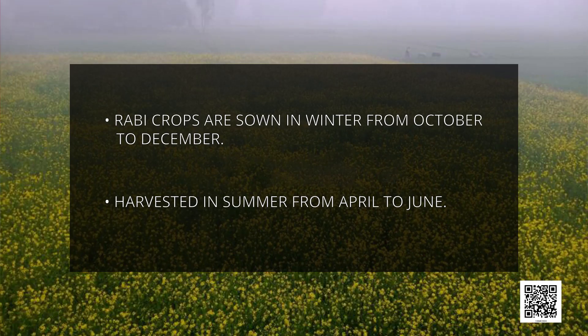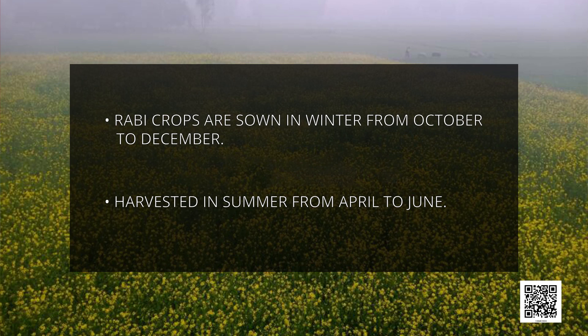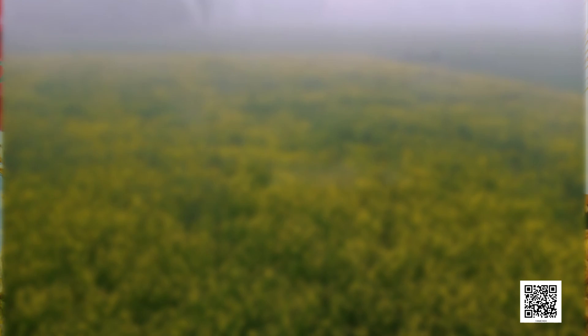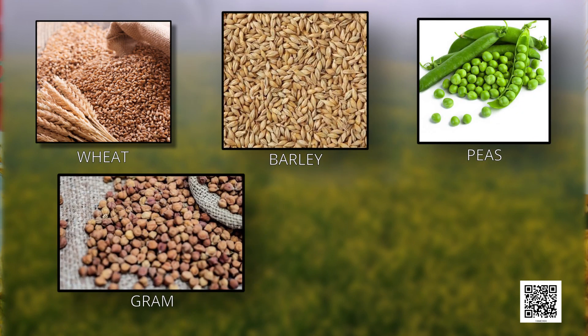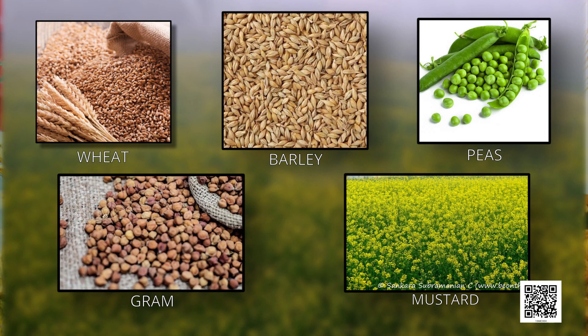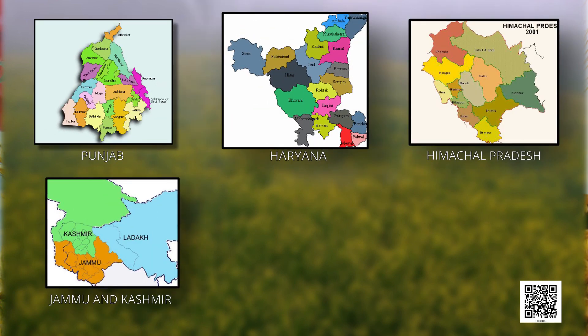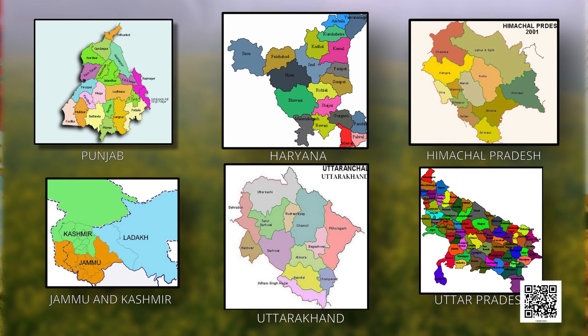Rabi crops are sown in winter from October to December and harvested in summer from April to June. Some of the important Rabi crops are wheat, barley, peas, gram and mustard. Though these crops are grown in large parts of India, states from the north and northwestern parts such as Punjab, Haryana, Himachal Pradesh, Jammu and Kashmir, Uttarakhand and Uttar Pradesh are important for the production of wheat and other Rabi crops. Availability of precipitation during winter months due to western temperate cyclones helps in the success of these crops.